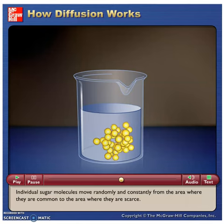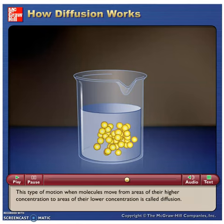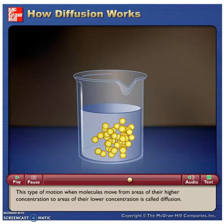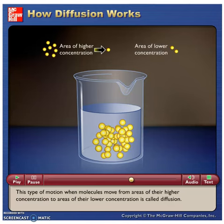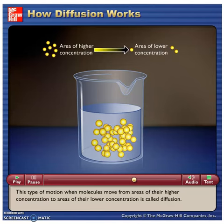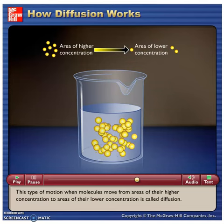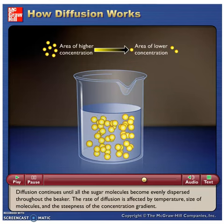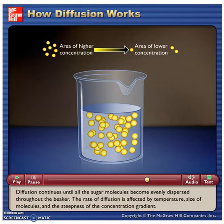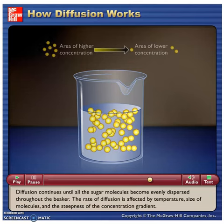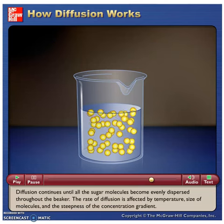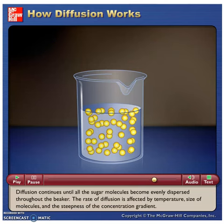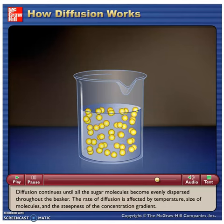Individual sugar molecules move randomly and constantly from the area where they are common to the area where they are scarce. This type of motion — when molecules move from areas of higher concentration to areas of lower concentration — is called diffusion. Diffusion continues until all the sugar molecules become evenly dispersed throughout the beaker.